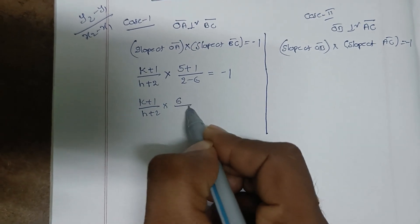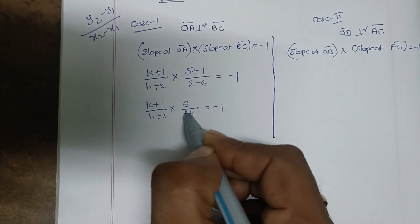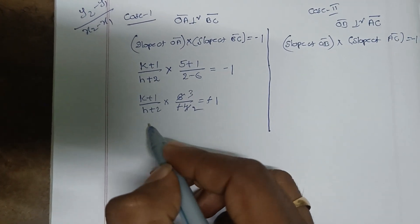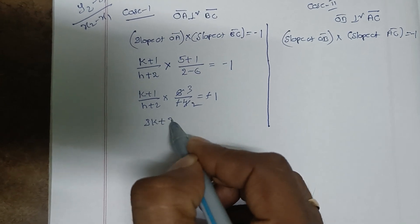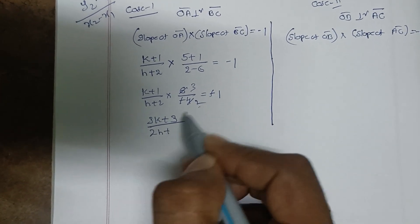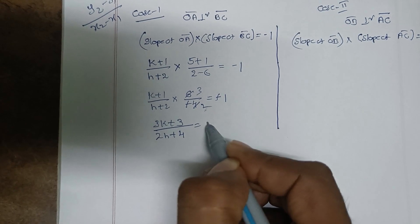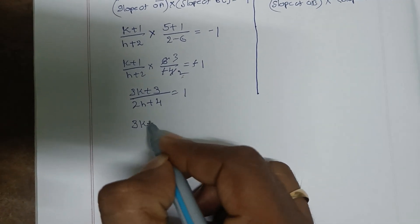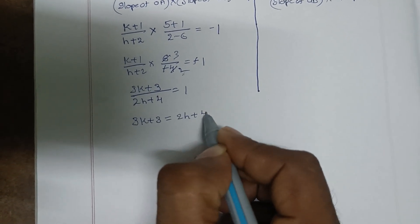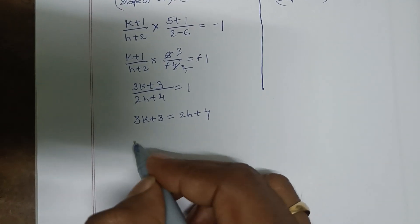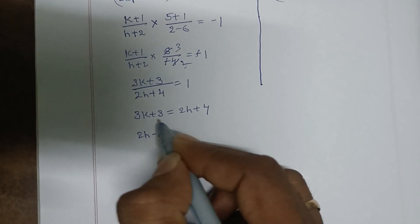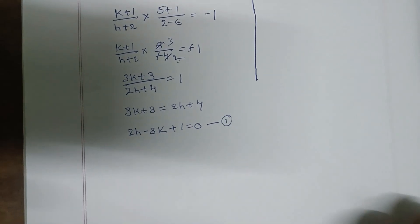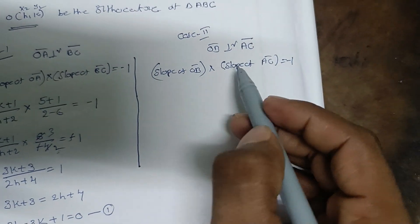Simplifying: (k + 1)/(h + 2) times (-7/4) = -1. This gives us (k + 1)/(h + 2) = 4/7. Cross-multiplying: 7(k + 1) = 4(h + 2), which simplifies to 4h - 7k + 1 = 0. This is our first equation.